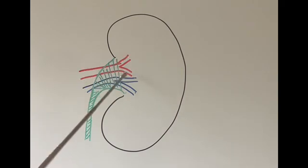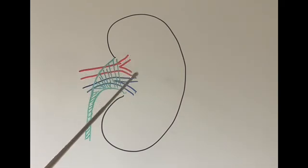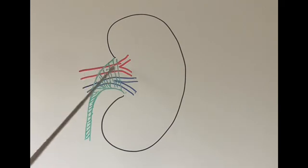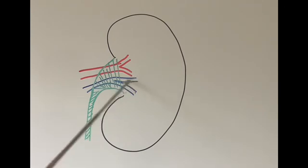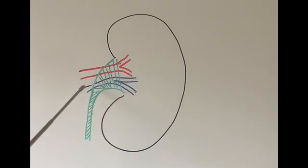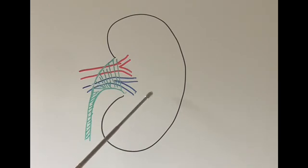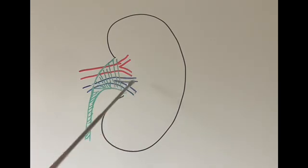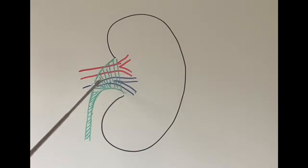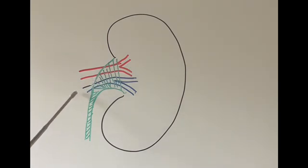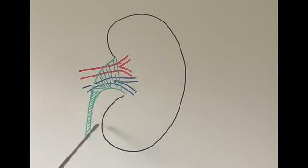The first is the red structure I have drawn, which is the artery — called the renal artery. It arises from the main blood vessel in our tummy called the aorta. The second structure, drawn in blue, is the renal vein. After the renal artery supplies the kidney, the impure blood is recollected and exits through the renal vein, which drains into the inferior vena cava — the main vein in our body — and takes the blood back to the heart.